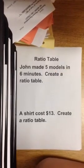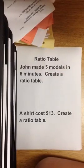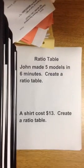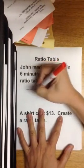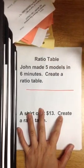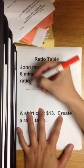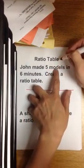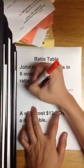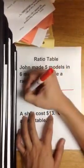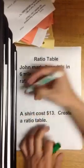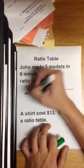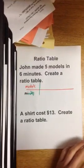For example, John made five models in six minutes. Create a ratio table. A ratio table is like a t-chart - remember when we added and subtracted fractions? This one is about models and minutes. Let's write 'models', and I'll use green to write 'minutes'.